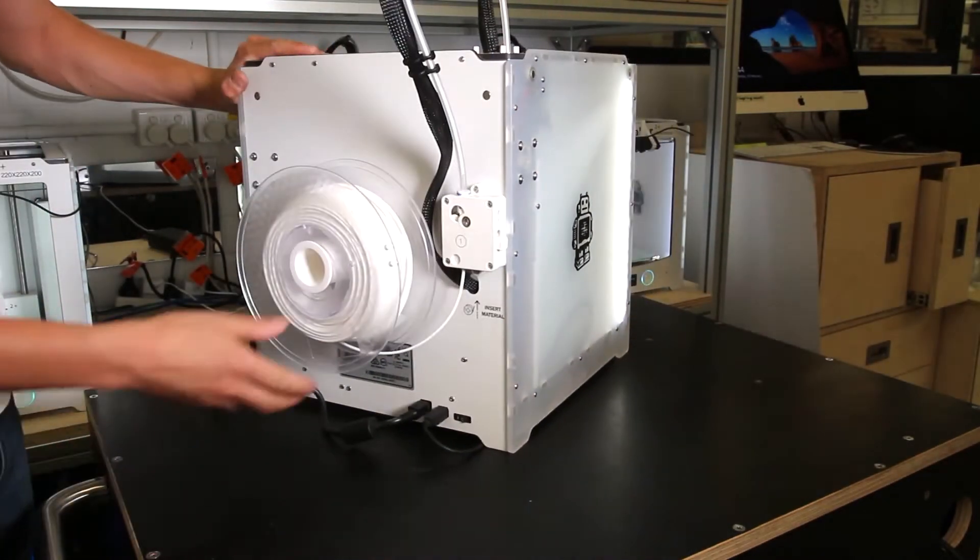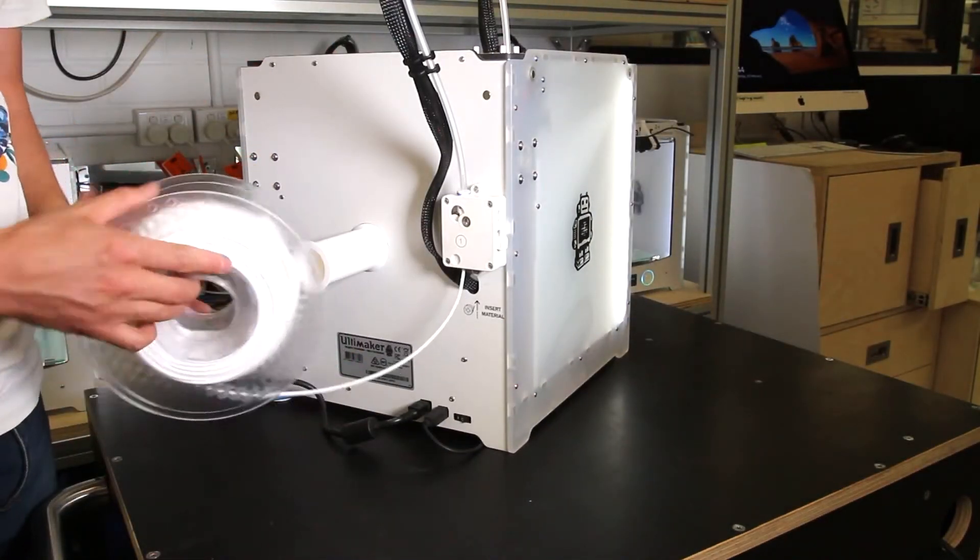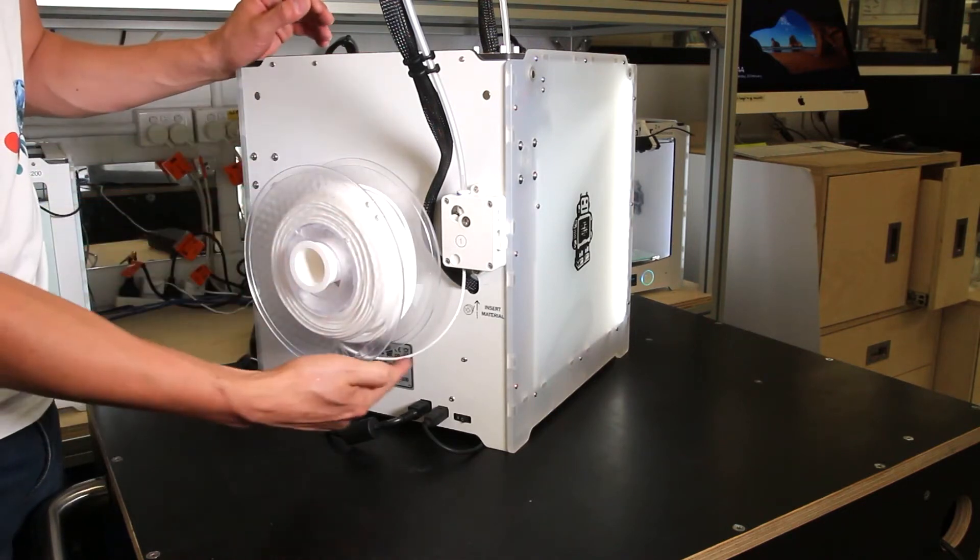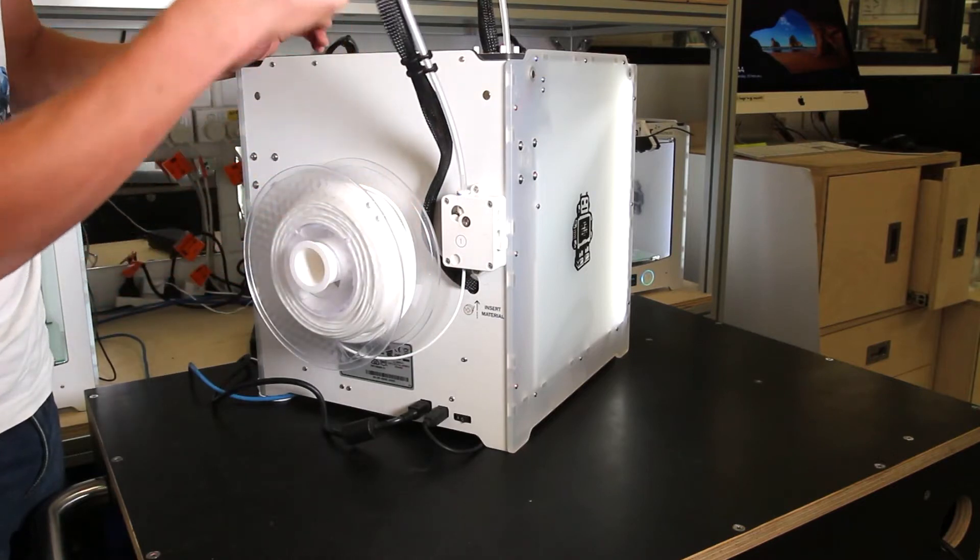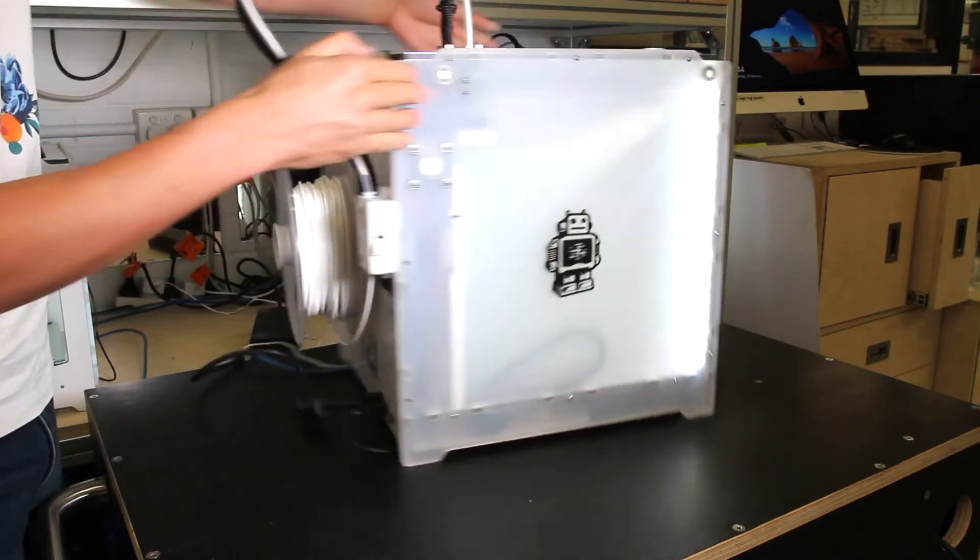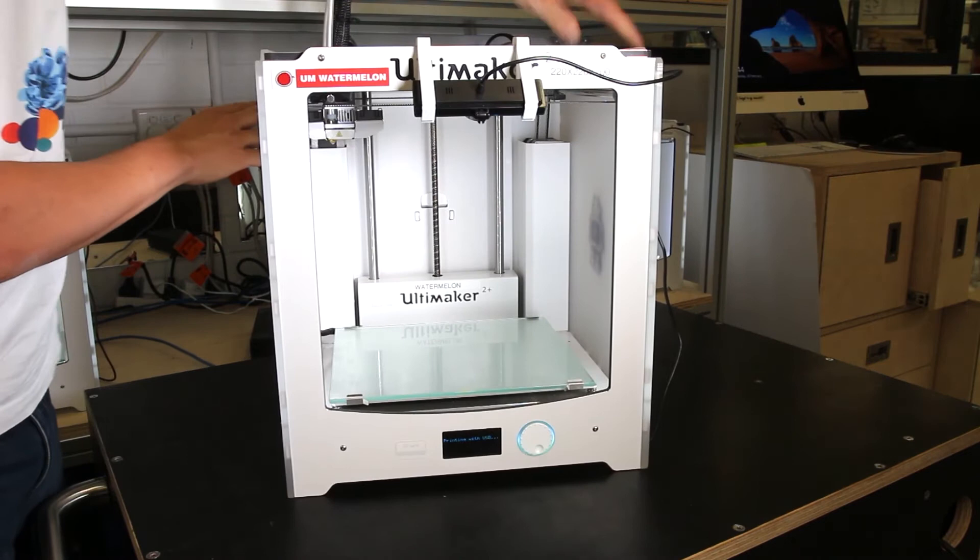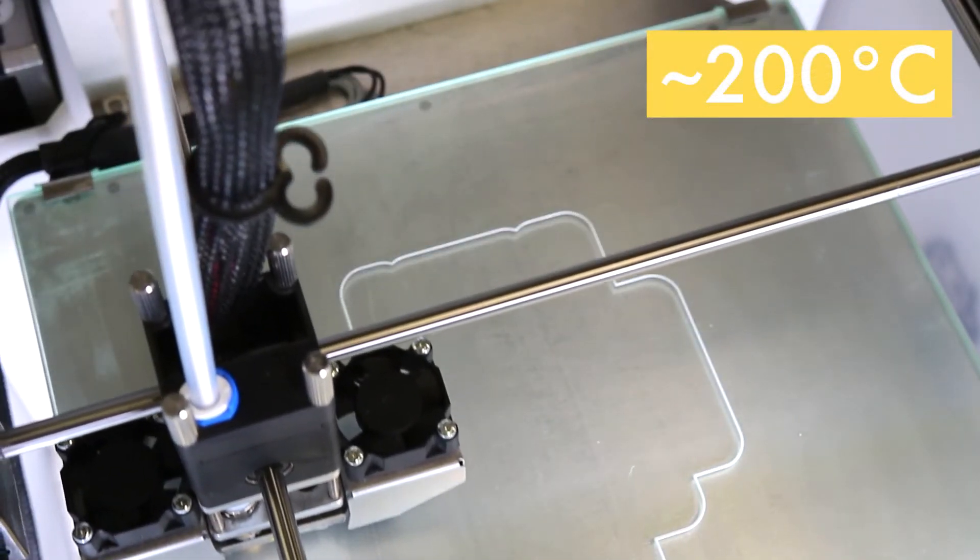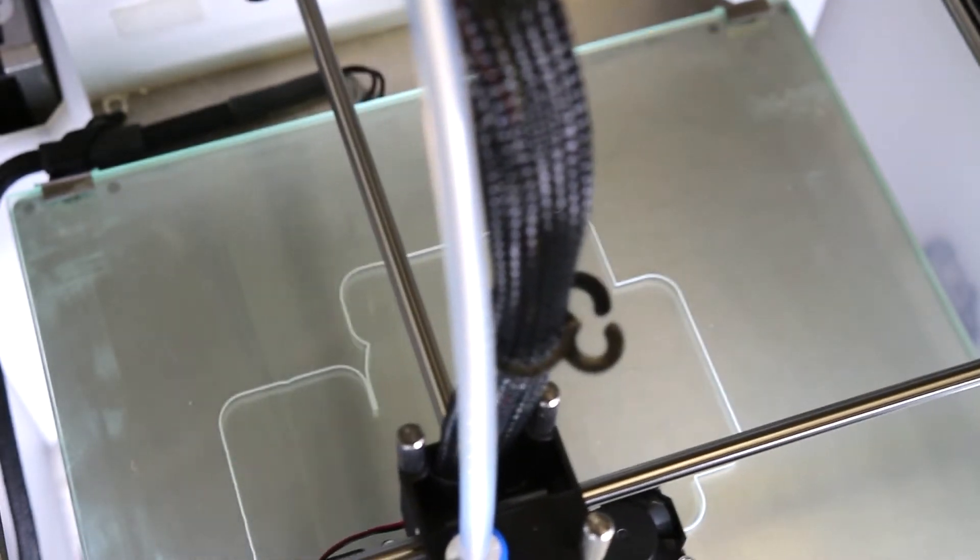This type of 3D printer works by extruding plastic from a reel on the back of the machine. The plastic is pulled off the reel and fed into what's called the hot end. This hot end melts the plastic at about 200 degrees Celsius and draws your model layer by layer until your object is made.